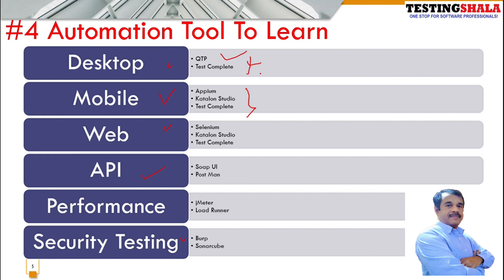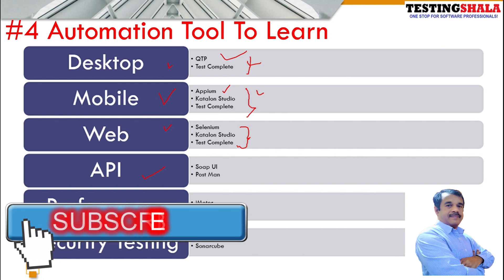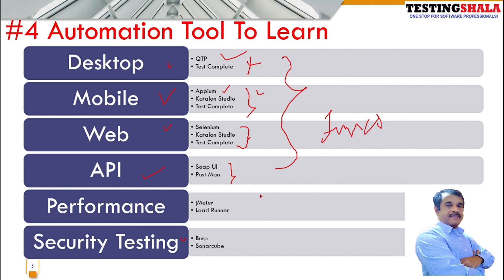If you are picking desktop automation, you should learn QTP and TestComplete. If you are looking for mobile app automation, you should look for Appium, which is a completely open-source automation tool, as well as Katalon Studio and TestComplete. If you are looking for an e-commerce or web application, you should automate using Selenium, Katalon Studio, and TestComplete. For API test automation, you should look at SoapUI and Postman.